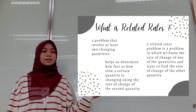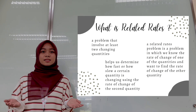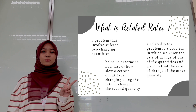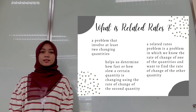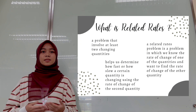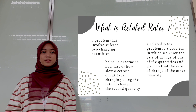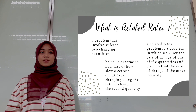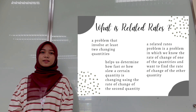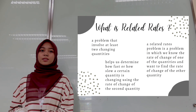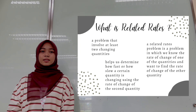Next, we go to related rates. What is related rates? Related rates is a problem that involves at least two changing quantities. We use related rates because it helps us determine how fast or how slow a certain quantity is changing, using the rate of change of another quantity. In other words, a related rates problem is one in which we know the rate of change of one quantity and we want to find the rate of change of another quantity.